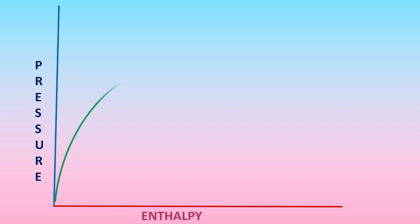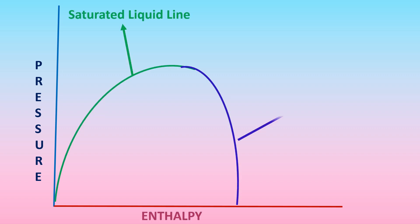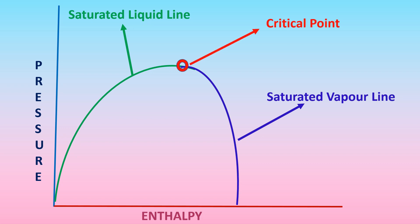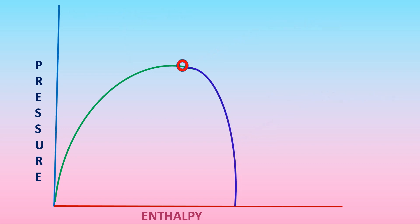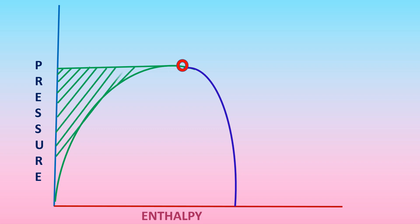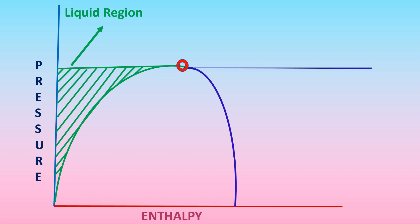Before going to superheat, let's understand the pH chart first and where superheat happens. The green curve shows the saturated liquid line, the light blue curve shows the saturated vapor line. The point where the saturated liquid line and saturated vapor line meet is called the critical point.